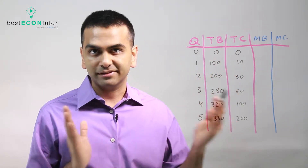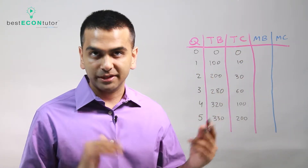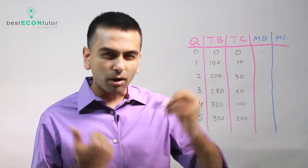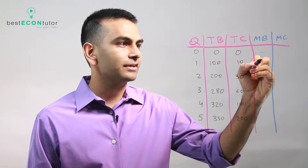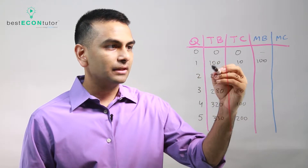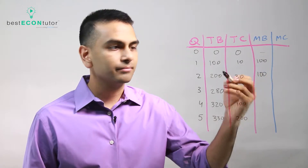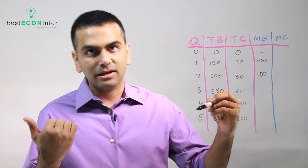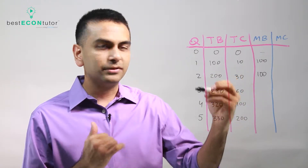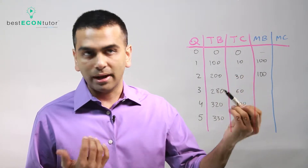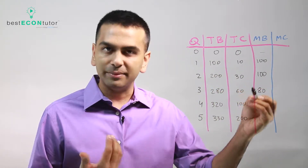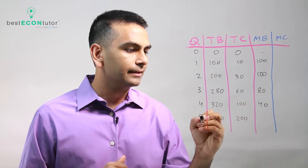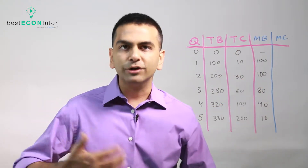Let's talk about how to find marginal values from total values. If we're given the total benefit, we want to find the marginal benefit. Going from zero to one house, your benefit goes up by 100 — marginal just means the next value — so your marginal benefit for the first house is 100. Going from one to two houses, it also went up by 100. Going from two to three, you went from 200 to 280, so that's an $80 marginal benefit. Then 280 to 320 is 40, and the next is 10.